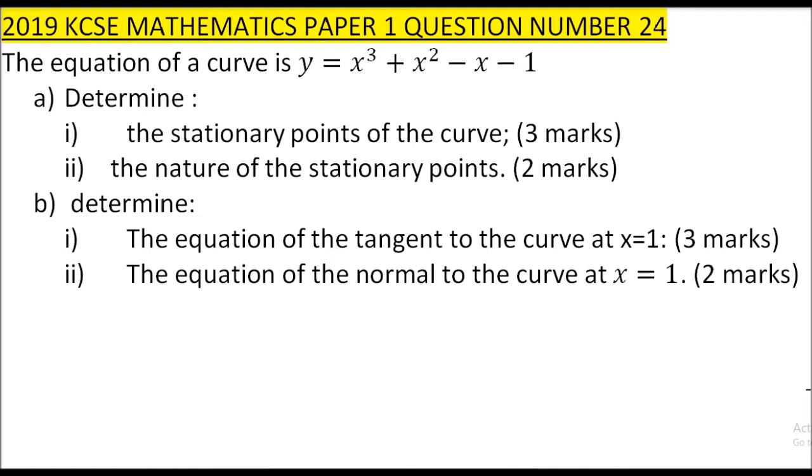This is a cubic function. The stationary points are the turning points of a curve. The tangent at the turning point is a line parallel to the x-axis, which means its gradient is equal to 0. So if we get the gradient of this function and equate it to 0, we will be able to get the turning points.